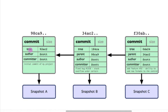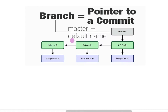We talked about how various commits come together and create a Git history. This commit is pointing to the previous commit, and that commit is pointing to its parent. Any commit represents a snapshot of the repository — we can call it the current snapshot of your repository.